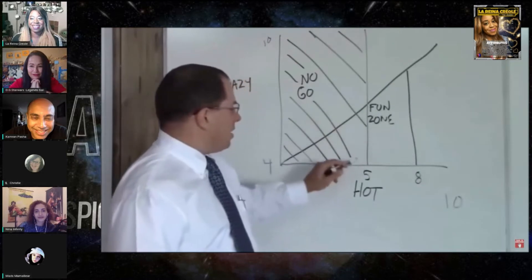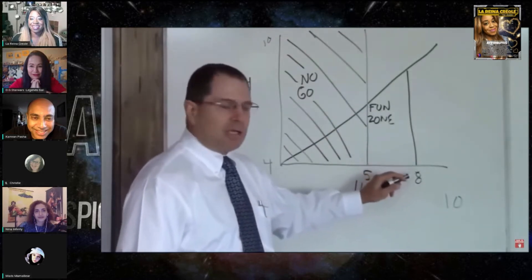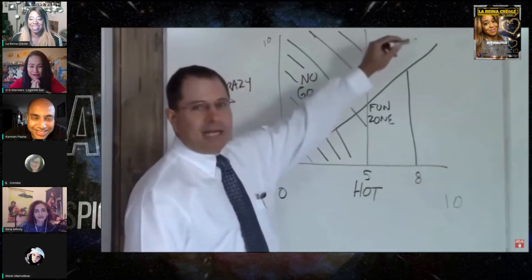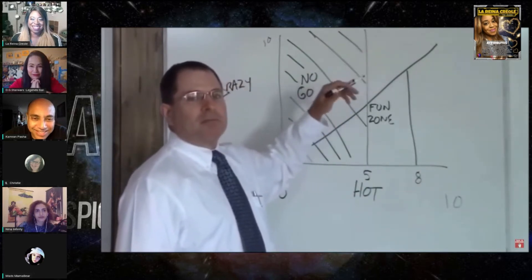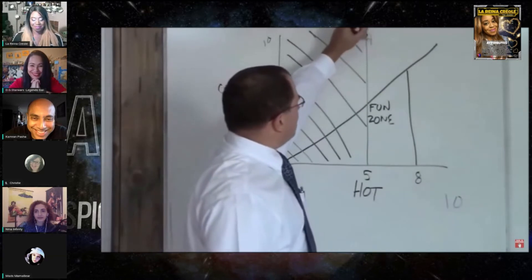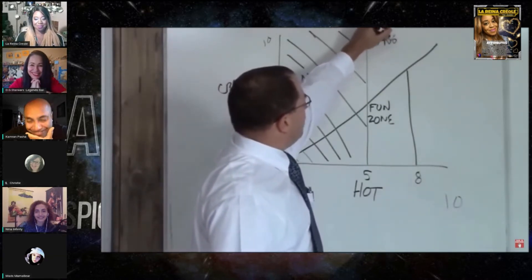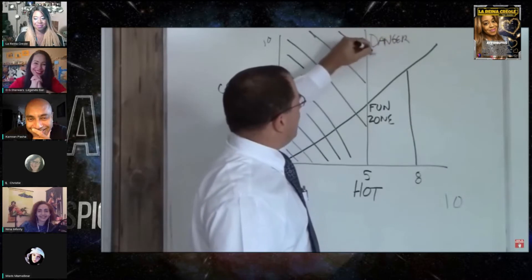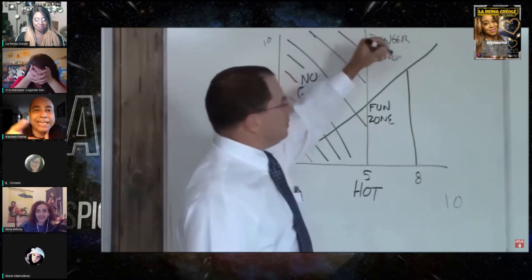Above a five hot, below an eight hot, and below the crazy line, these are most of the time not crazy. Above the danger zone, above the crazy line, we have the danger zone. So that's Amber Heard.